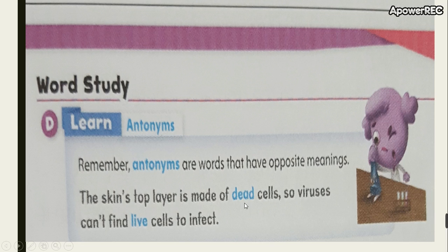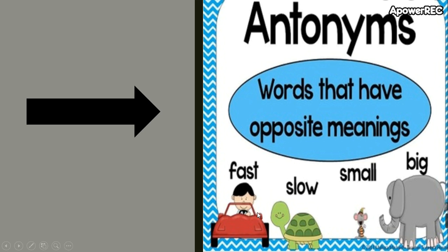For example, the skin's top layer is made of dead cells, so viruses can't find live cells to infect. Fourth grade, look at this example — what do you think about these two words: dead and live? Look at the blue line here: dead, live. Take three seconds to think. Okay, dead is the opposite of live — yeah!